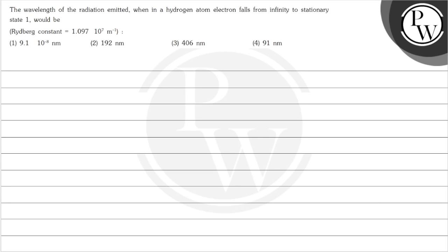Hello, let's start with the question. In this question we are asked that the wavelength of radiation emitted when in a hydrogen atom an electron falls from infinity to stationary state 1 would be, and the Rydberg constant is given to us, and we have 4 options.